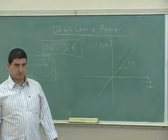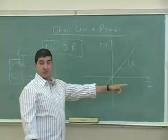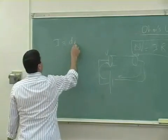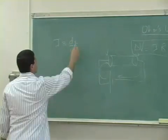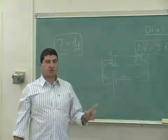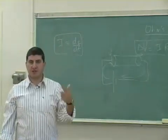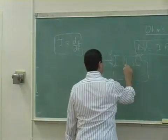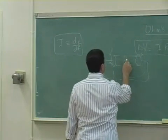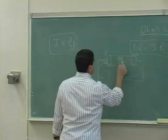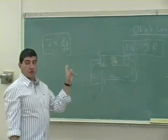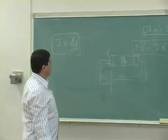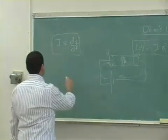The official definition of current is dq/dt — it's the rate at which charge is flowing through any cross-sectional element of the circuit. How much charge is flowing through that cross-section per unit time?